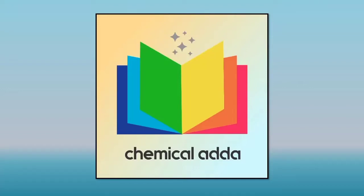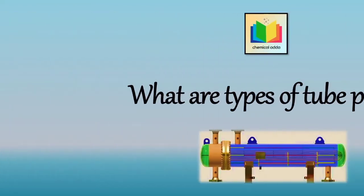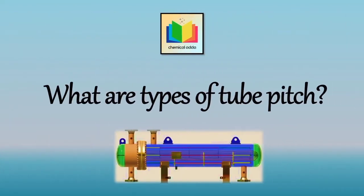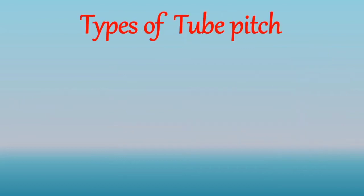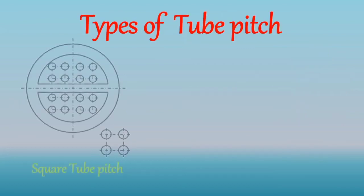Hello everyone, welcome to my YouTube channel. In this video we will discuss what are the types of tube pitch. The shortest center-to-center distance between the tubes is called tube pitch. In a shell and tube heat exchanger, the tubes are arranged either on a square pitch or on an equilateral triangular pitch.